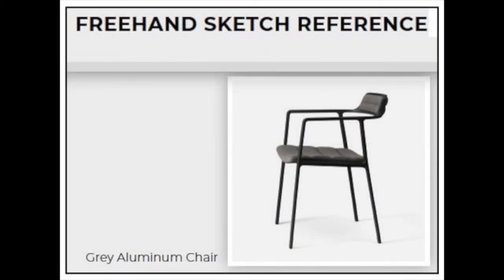This student has chosen a reference picture for her chair that was shot in one-point perspective — that whole side of the chair is facing us completely. When she makes her drawing, she'll need to turn it around so that we can see the front-facing corner first. Note that we would like to have seen what design style this grey aluminum chair belonged to.